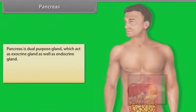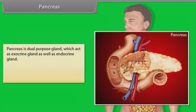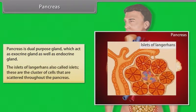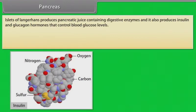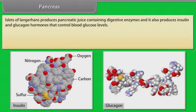The pancreas is a dual-purpose gland, which acts as an exocrine gland as well as an endocrine gland. The islets of Langerhans, also called islets, are clusters of cells scattered throughout the pancreas. The islets of Langerhans produce pancreatic juice containing digestive enzymes, and they also produce insulin and glucagon hormones that control blood glucose level.